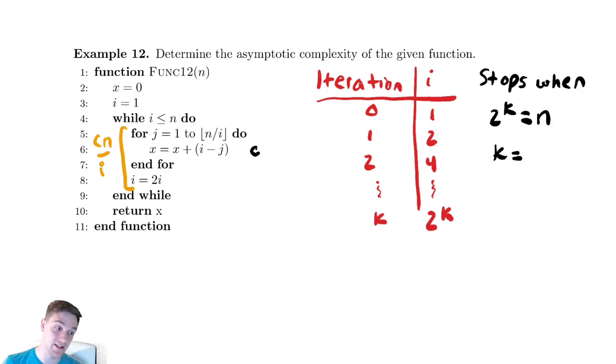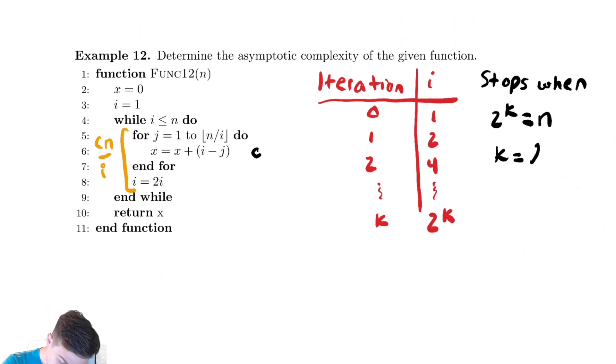Take a log base 2 of both sides, and we have k is equal to log base 2 of n. So the outer while loop iterates log base 2 of n times.